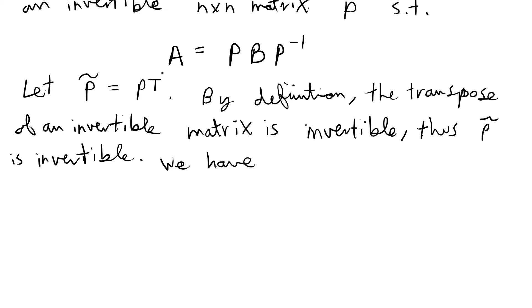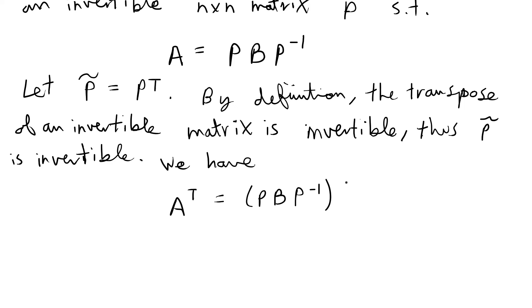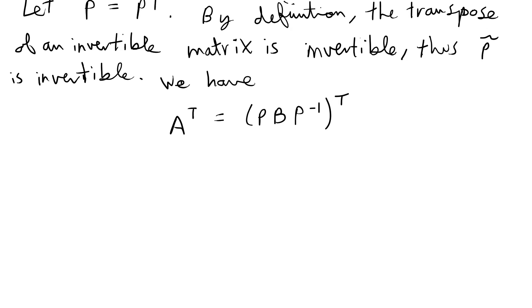So thus we can have the following. I'm going to take the transpose on both sides of the equation. On the left-hand side, the transpose is just going to be A transpose. On the right-hand side, I'm going to take the transpose of P times B times P inverse.